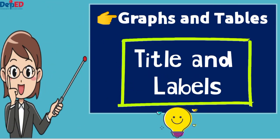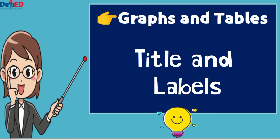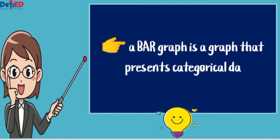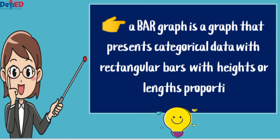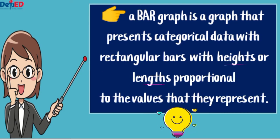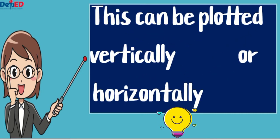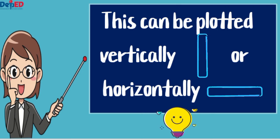Graphs and tables have a title that tells what the graph or table is about. It has labels showing the contained data. A bar graph is a graph that presents categorical data with rectangular bars with height or length proportional to the values they represent. This can be plotted vertically or horizontally.